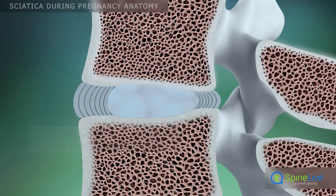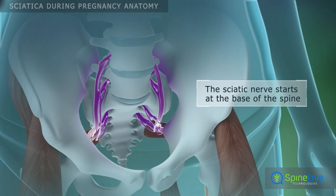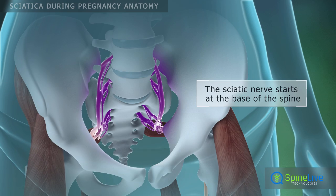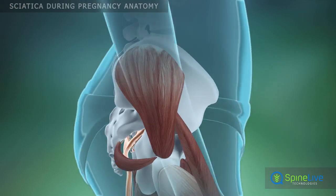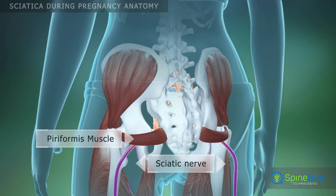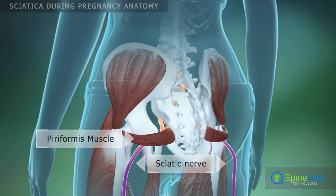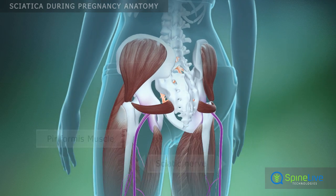The sciatic nerve is one of the body's major nerves. It begins from a group of spinal nerves at the base of the spine, runs under the piriformis muscle, and then extends down into the thigh and leg.